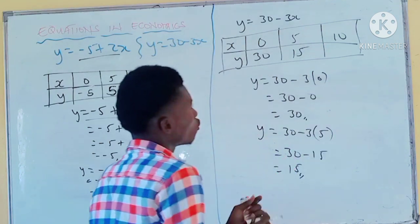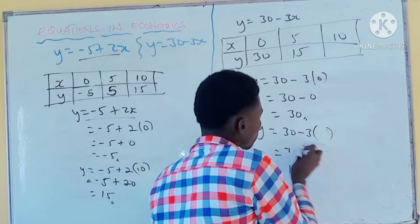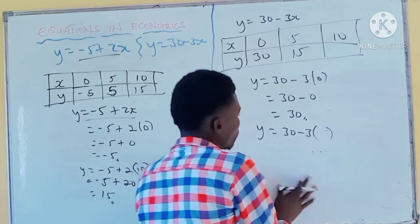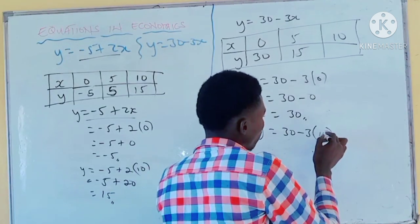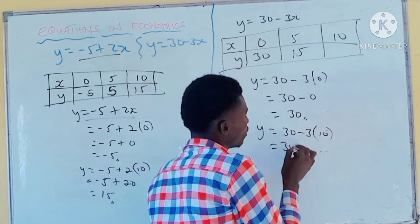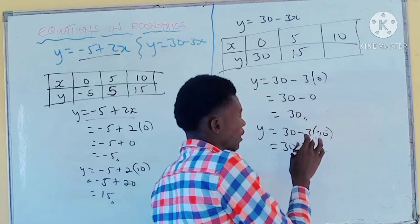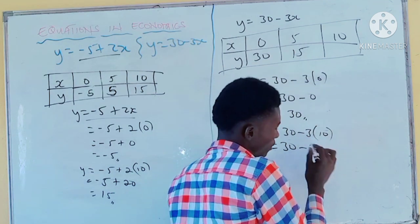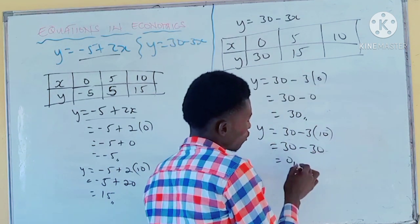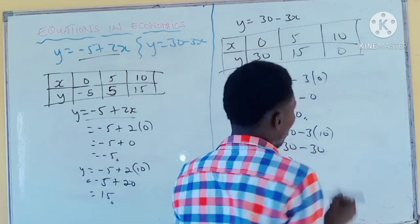When x is 10: anywhere you see x, put 10. 3 times 10 is 30. 30 minus 30 is 0. So that is 0 directly.